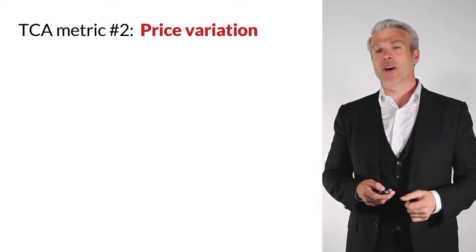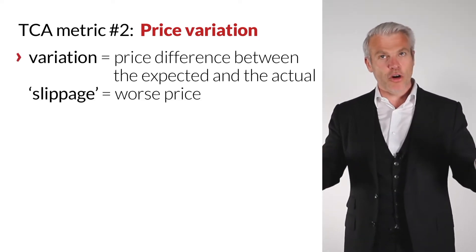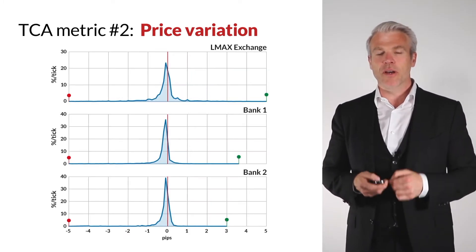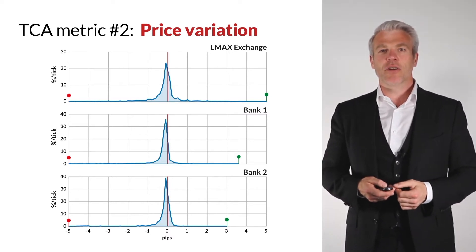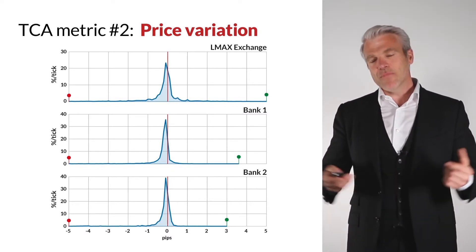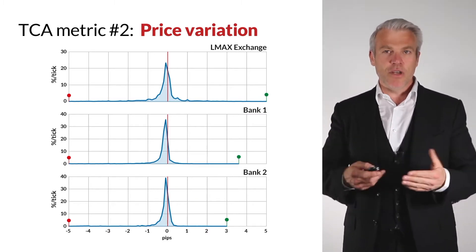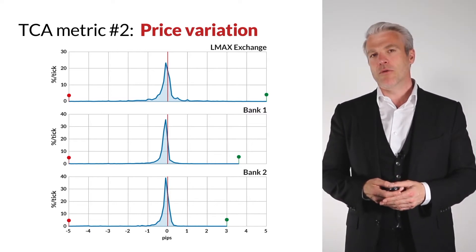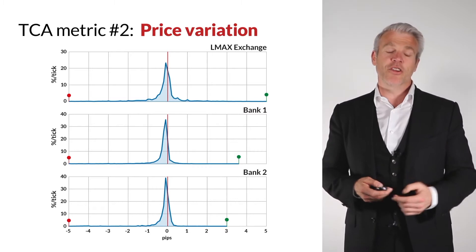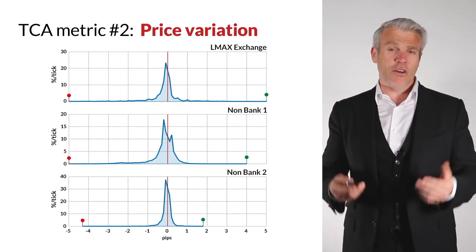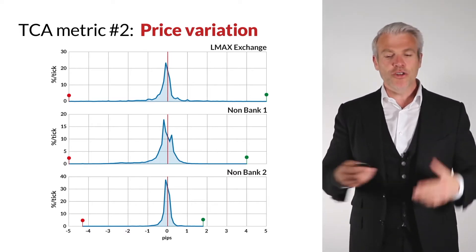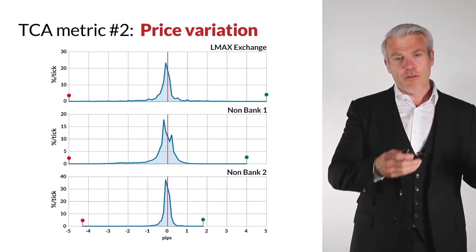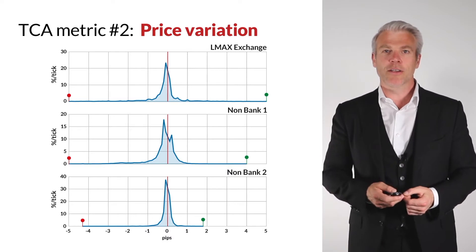Moving on to TCA metric number two: price variation, and slippage. For market orders, slippage would be on the left-hand side and price improvement on the right. Many would think it's 50/50, but it generally isn't. On the LMAX Exchange central limit order book, the slippage-to-price-improvement ratio is roughly two to one. You'd expect that across all providers, but unfortunately we've seen results as skewed as nine to one. Two to one seems reasonable on the basis that client flow generally follows the wind — buying in a rising market and selling in a falling market.